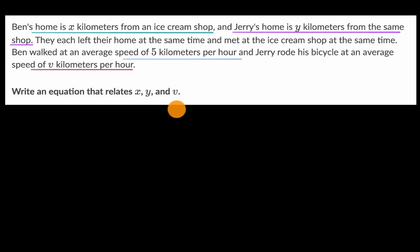All right, so let's remind ourselves how distance, speed, and time are related. You might be familiar with things like distance is equal to rate times time, or another way you could think about it is distance equals speed times time.